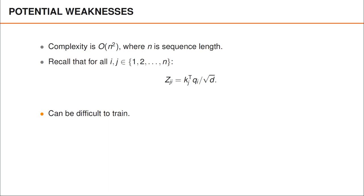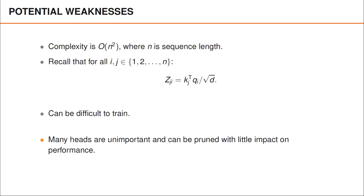Another problem is that the network can be difficult to train. In particular, the original network is often trained with a carefully designed learning rate warm-up stage, which may be difficult to select and which also slows down training. Finally, people have demonstrated that it's often possible to remove many of the self-attention heads after training without losing much accuracy. The fact that we can remove large parts of the architecture is not exactly a disadvantage since it reduces complexity, but it may indicate that the network is unnecessarily complicated to begin with.